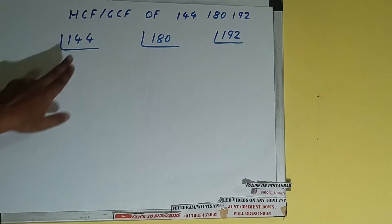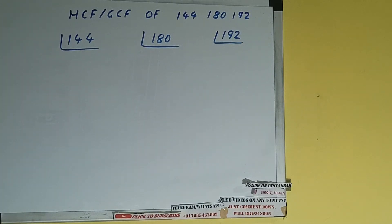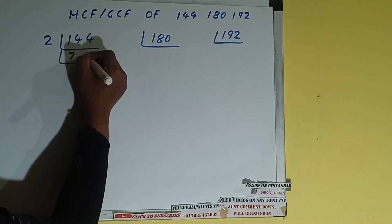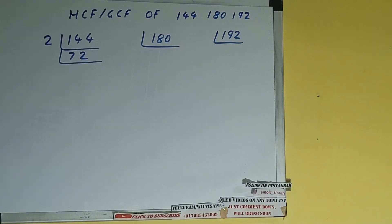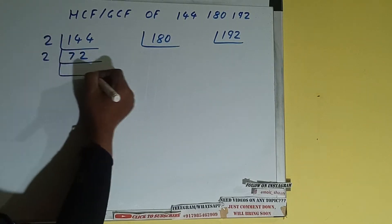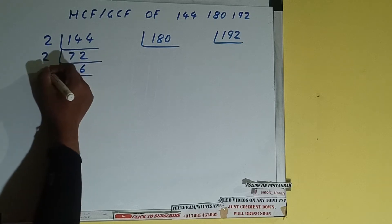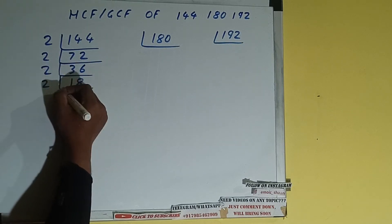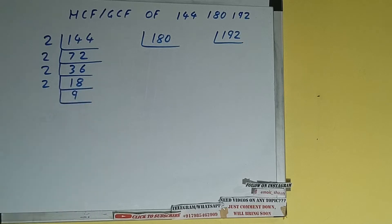Let's start with the number 144. We'll check with the lowest prime number 2. Is 144 divisible by 2? Yes it is, because the number is even, and we'll get 72. Is 72 again divisible by 2? Yes it is, so divide it and we'll get 36, which is again divisible by 2, giving us 18.